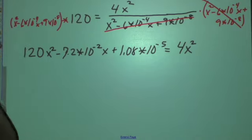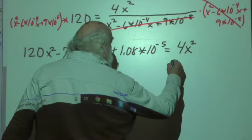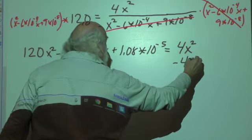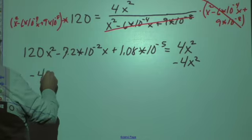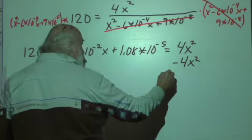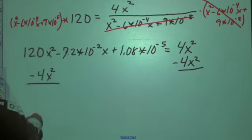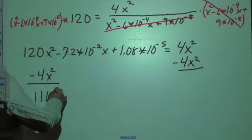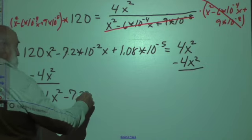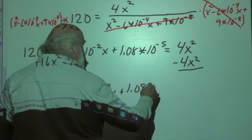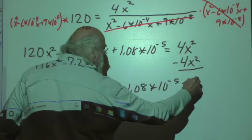Now we've got to subtract 4x squared to get that equal to zero. So that's going to give me 116x squared minus 7.2 times 10^-2 x plus 1.08 times 10^-5 equals zero.